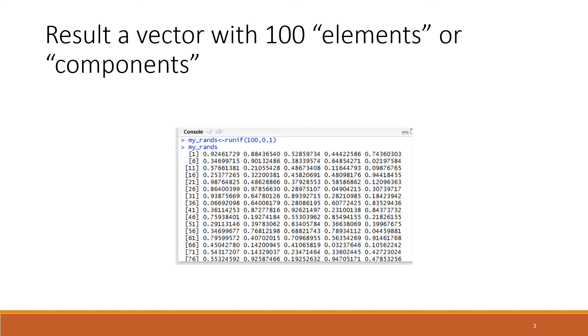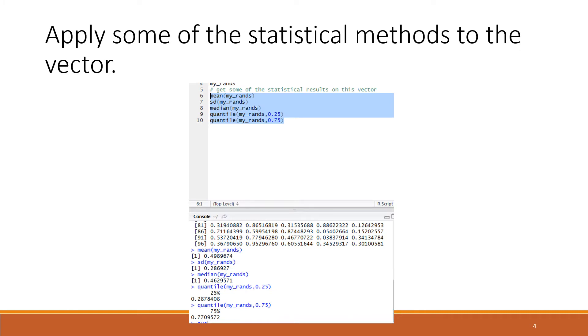The 100 uniformly distributed random numbers were assigned to the variable my_rands. My_rands is a distribution of numbers, a vector of numbers, and we can get the statistics for that vector.